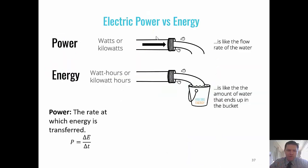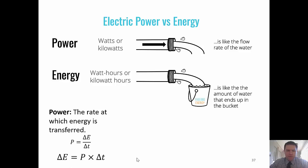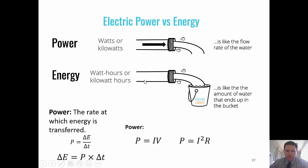Electrical power versus energy: power is the rate at which energy is transferred, measured in watts. In the previous example, three watts were being transferred every second. In one second that's three joules; in a minute — 60 seconds — three times 60 gives 180 joules of energy used. In household appliances we often measure in kilowatt hours.